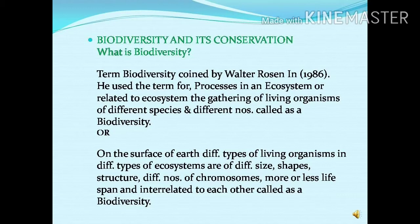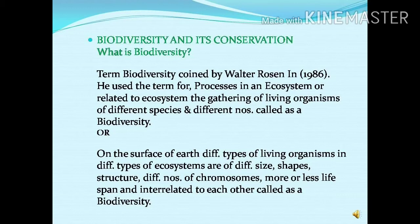Scientifically, biodiversity is nothing but a variety of species in a particular ecosystem or in a particular geographical area. This variety of different types of systems or species we can broadly call biodiversity. Or in other language, the living organisms of different types of ecosystems are of different sizes, shapes, structures, different numbers of chromosomes, and more or less life span, interrelated to each other — they are collectively called biodiversity.